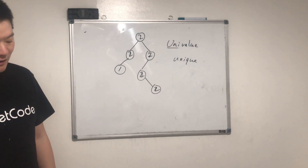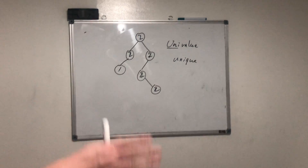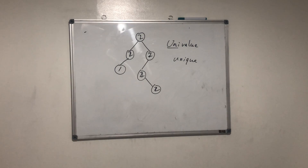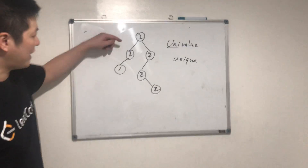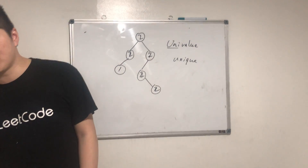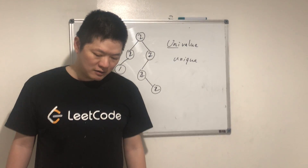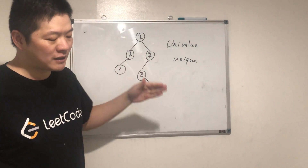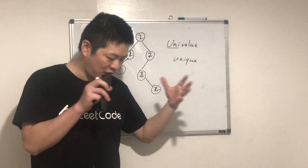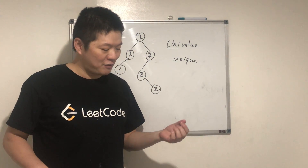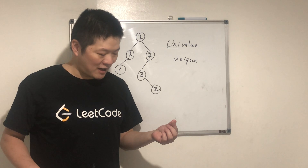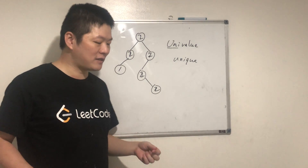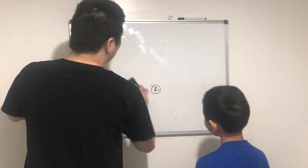Breadth-First Search and Depth-First Search. So there are two: Breadth-First Search and Depth-First Search. Of course there are more, but so far you've learned these two. So how about we use Breadth-First Search to solve this problem? What's Breadth-First Search? Level by level. And what kind of data structure do we use to implement Breadth-First Search? Queue — are we using a queue or stack? Queue, yes.